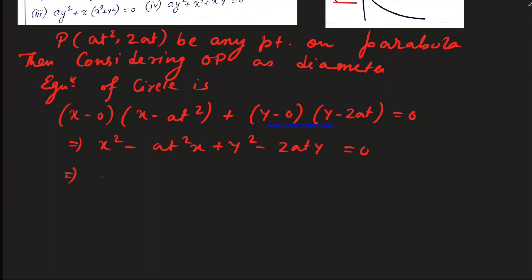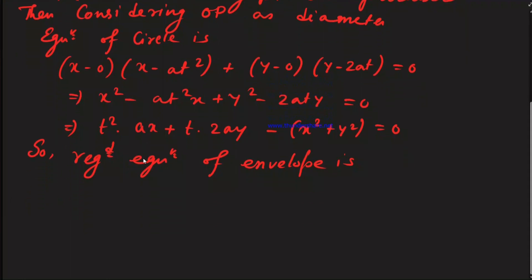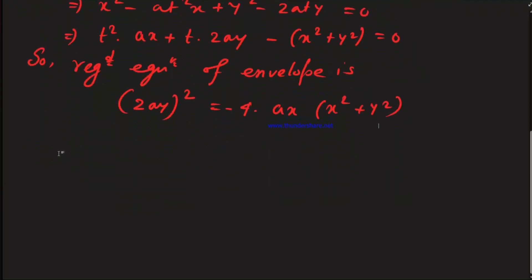Rearranging: t²(-ax) + t(-2ay) + (x² + y²) = 0. This is a quadratic equation in the parameter t. To find the envelope, we use the discriminant condition b² = 4ac: (2ay)² = 4·(-ax)·(x² + y²).